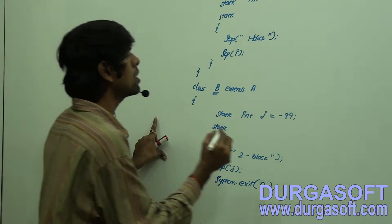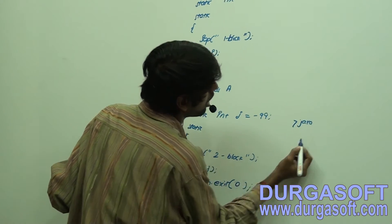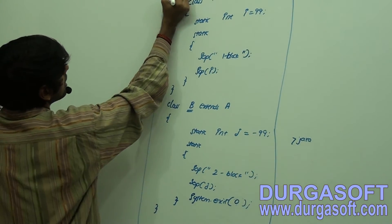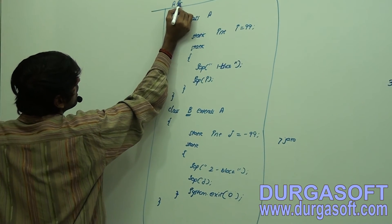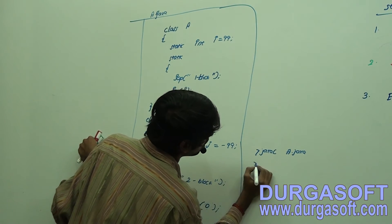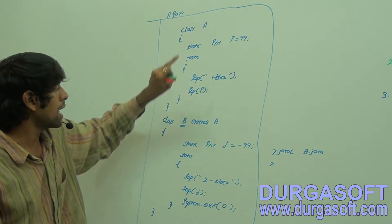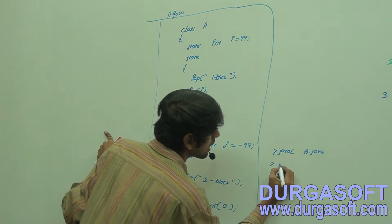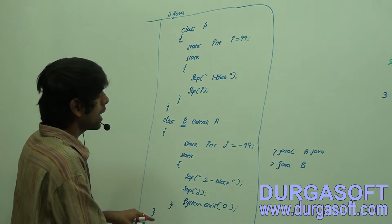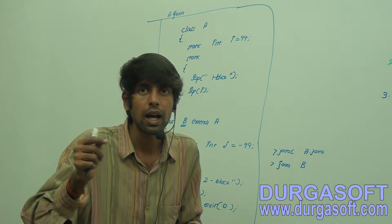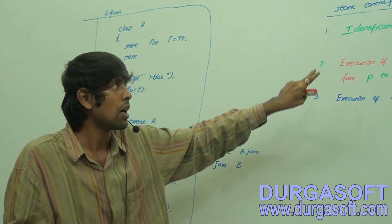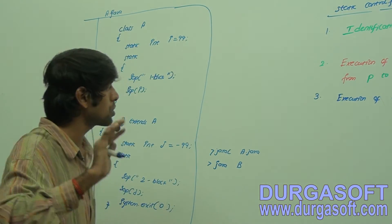Now let us load this class. I have saved the entire source code with the name a.java. To compile: javac a.java — two dot class files are generated, for class A and class B. To load class B: java B. The dot class file of the child is going to get loaded and since it is the child of class A, the static control flow from parent to child is going to execute.